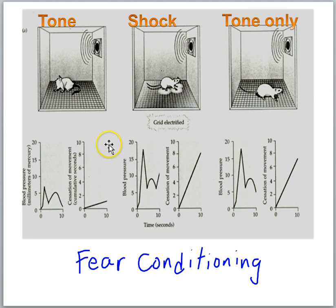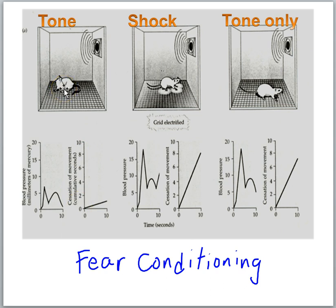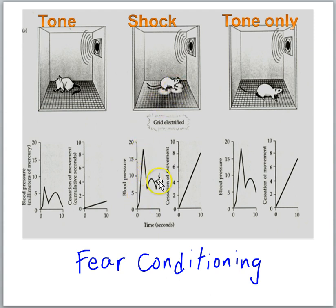In fear conditioning, the animal is put in a cage and hears a tone. The graphs shown here measure some of its behaviors: blood pressure, and cessation of movement — that's freezing. The tone initially is not significant to the animal; it's not afraid of the tone, so we don't see much of a rise in blood pressure and it doesn't really freeze very much. Next comes the shock — the grid is electrified and the animal gets a foot shock. That definitely raises the blood pressure and it freezes. This is a fear response.